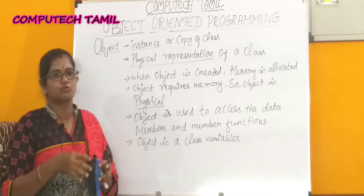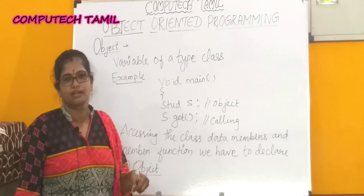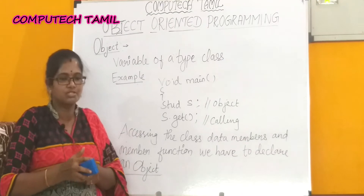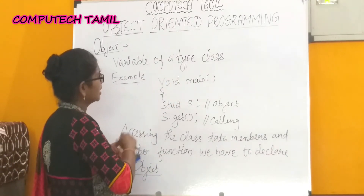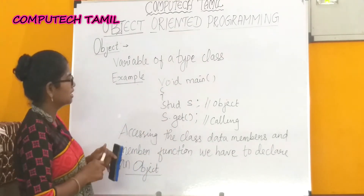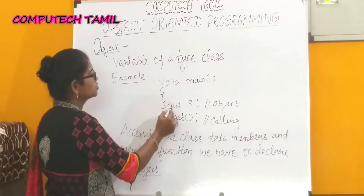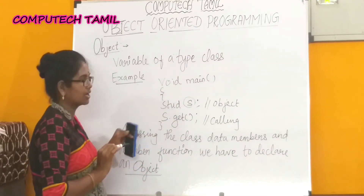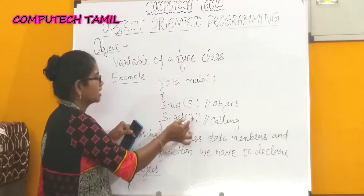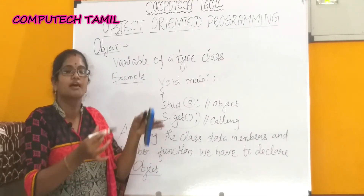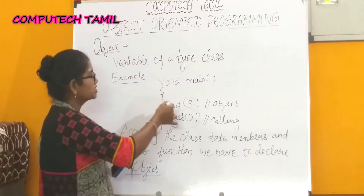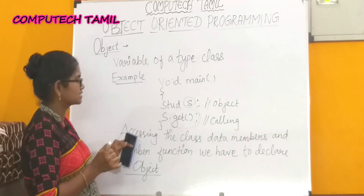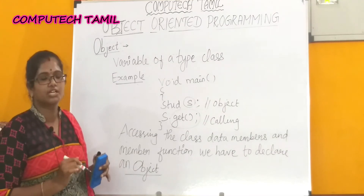An object is a class variable. We create an object. For example, in the main function: void main, student s, s.get(). Here, student is the class name, s is the object. Using this object s, we call s.get(), where get is the member function of the student class. That object is created to access the class data members and member functions.